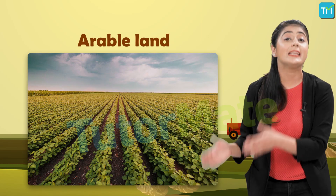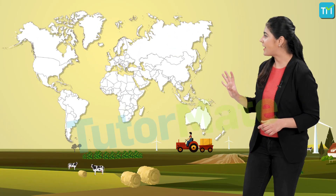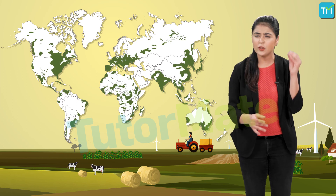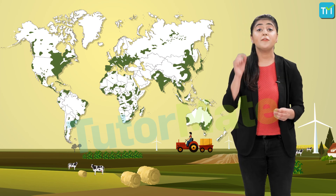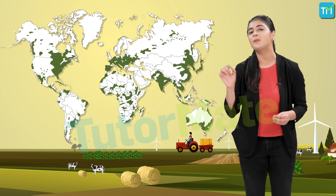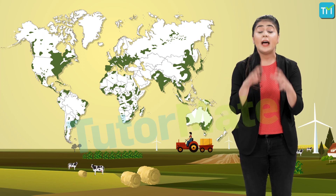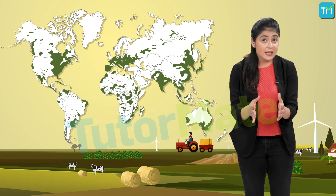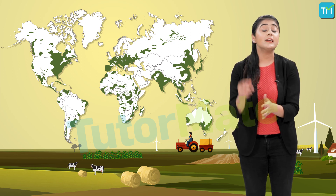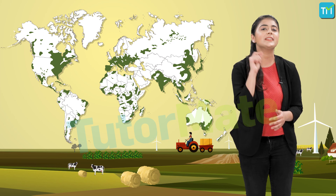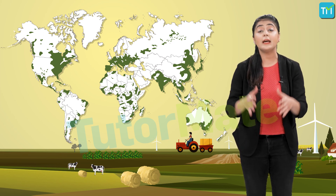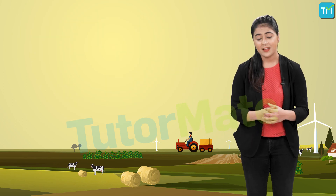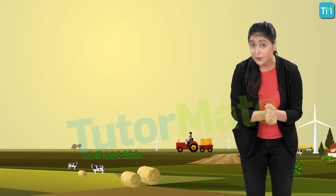The land which is fertile enough to grow crops is known as arable land. If you take a look at this map, you can see that agricultural activities are concentrated in regions of the world where favorable factors for crop cultivation exist. There isn't too much green on that map, which means mankind has to find smart ways to increase agricultural production to meet the ever-increasing food demands of the population.